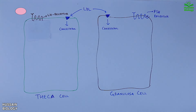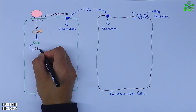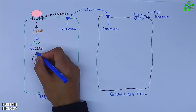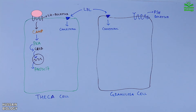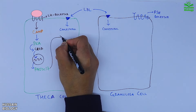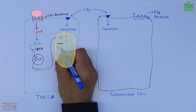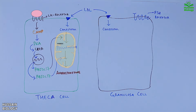The theca cell receives LH, which drives cAMP signaling, activating PKA and CREB molecules. CREB then goes to the nucleus and mediates transcription of the P450c17 enzyme, localized in the inner mitochondrial membrane. Cholesterol present in the theca cell is transported into the inner mitochondrial membrane by StAR protein, where it is acted upon by P450c17 and converted into pregnenolone, which is further converted into androstenedione.